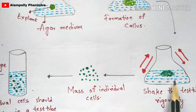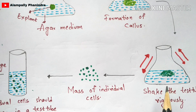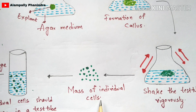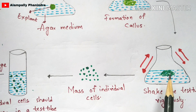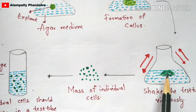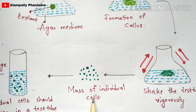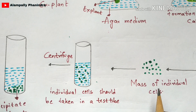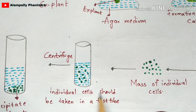Now, you have to shake the test tube vigorously — up and down and side by side, as indicated by the arrow marks in the diagram. When you shake this test tube, the callus present in the medium will get broken down to form a mass of individual cells. What was a mass of cells held together will get separated into individual cells.